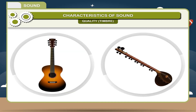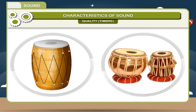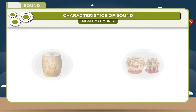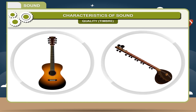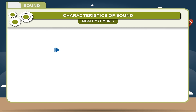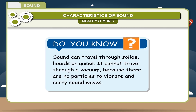For example, sound produced by guitar and sitar, and also sound produced by dholak and tabla, are different. We can easily differentiate the sounds of two instruments without seeing them because different instruments have different quality of sound — this sound quality is called Timbre. Sound can travel through solids, liquids, or gases. It cannot travel through a vacuum because there are no particles to vibrate and carry sound waves.